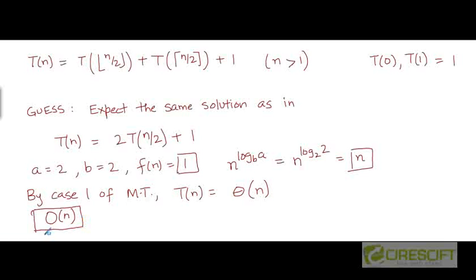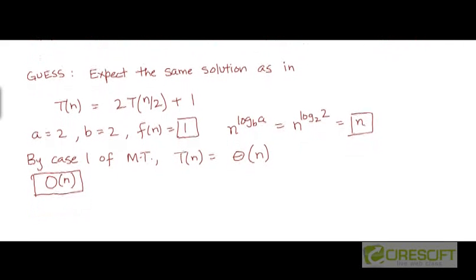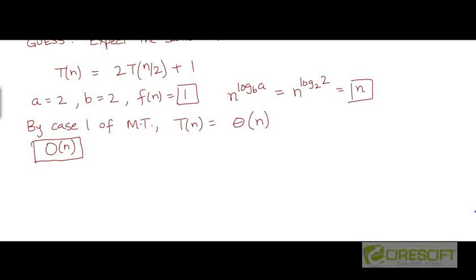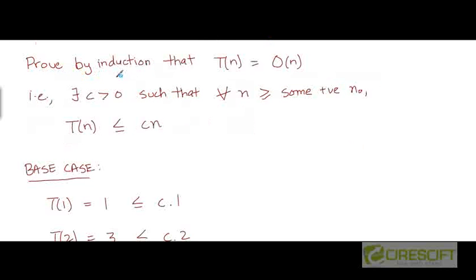Our guess for the upper bound is O(n), and we will prove this formally using induction. From the definition of big-O notation, we need to prove that there exists a positive constant c such that for all values of n greater than or equal to some positive threshold n₀, T(n) is bounded from above by c·n.